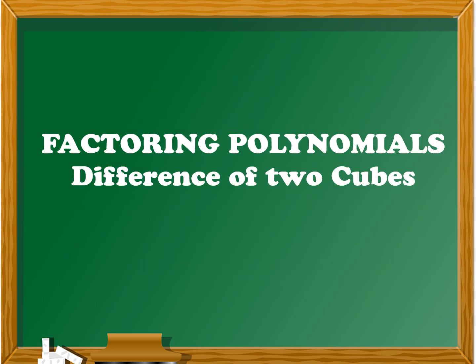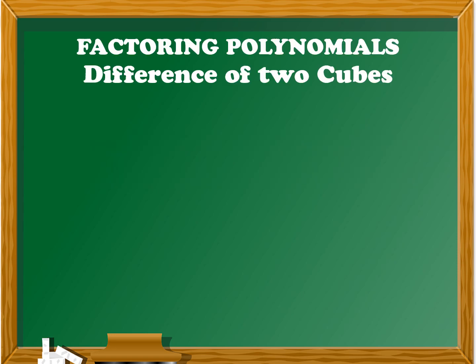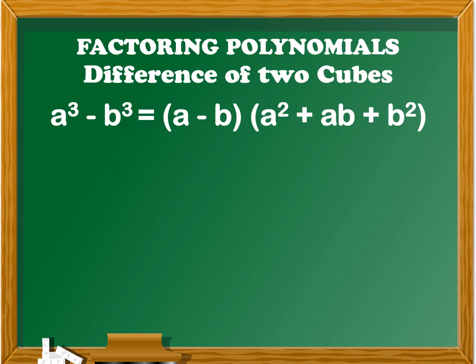Next topic is difference of two cubes. In the difference of two cubes, we have the formula: a cubed minus b cubed is equal to the quantity of (a minus b) times the quantity of (a squared plus ab plus b squared).